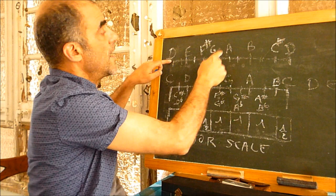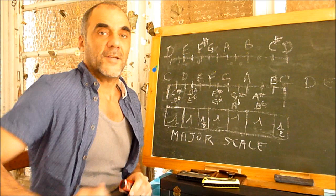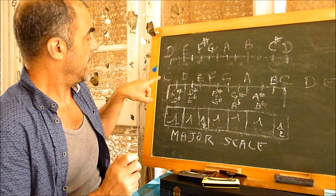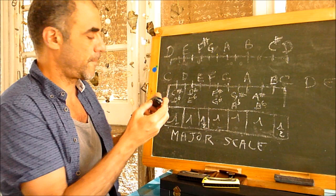So we applied the major scale structure formula to D, and we created the D major scale. The D major scale consists of these notes: D, E, F sharp, G, A, B, C sharp, D. We have seen the structure of the major scale beginning with C — the key is C — giving us C, D, E, and so on.